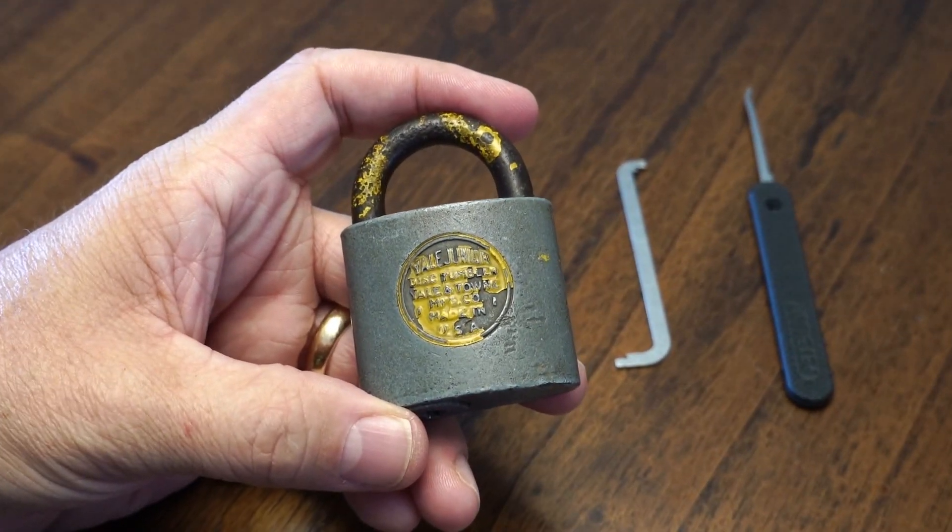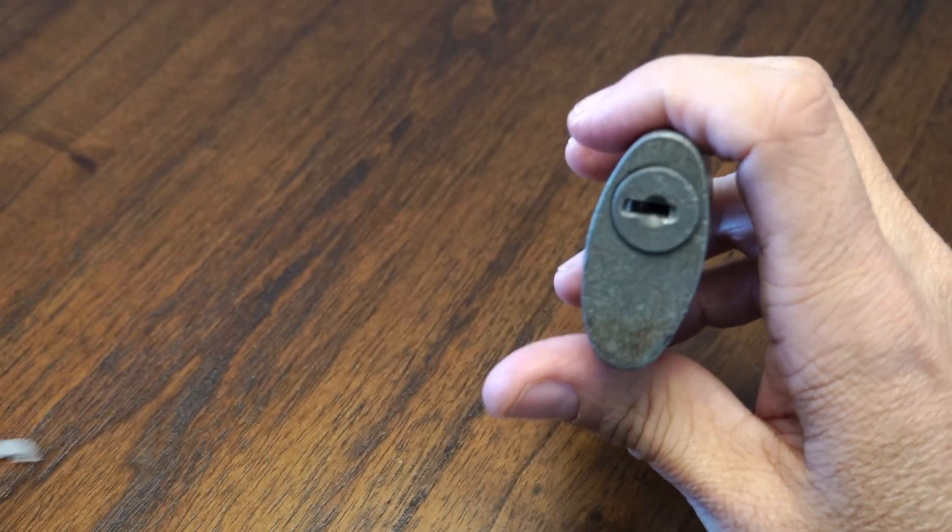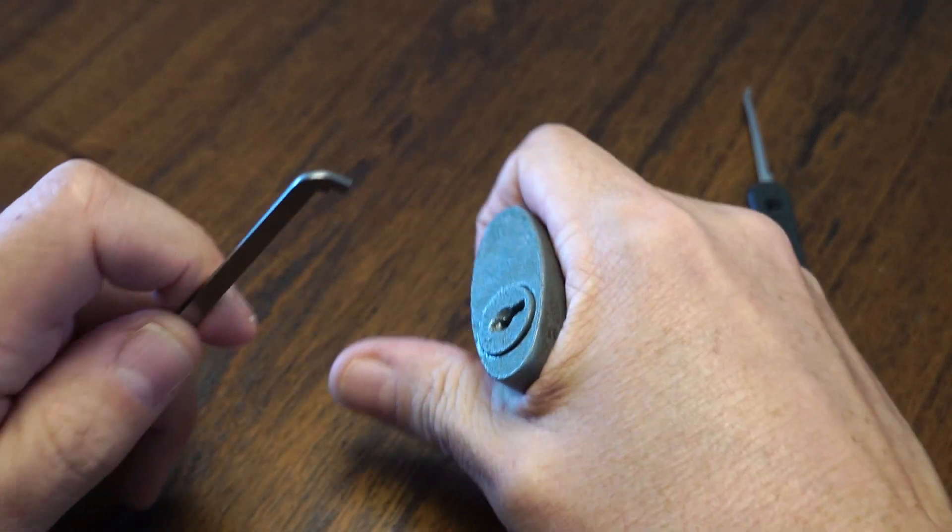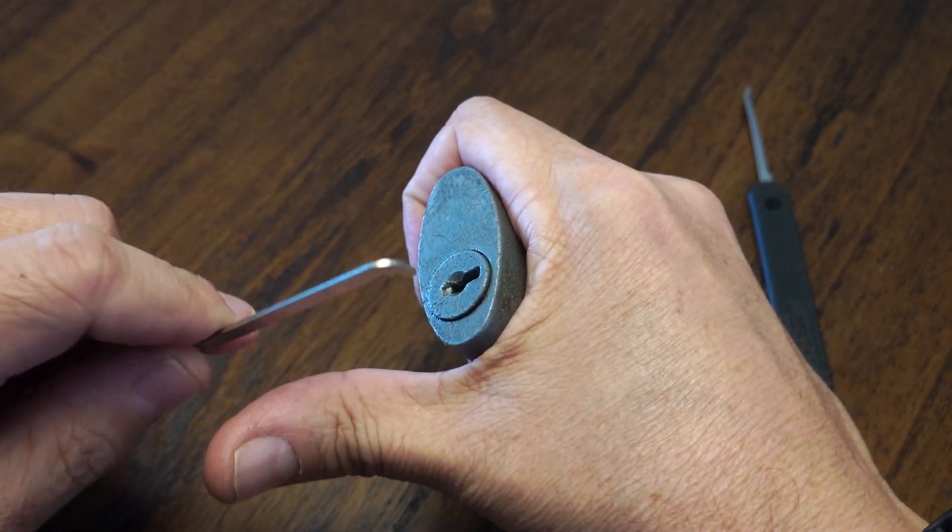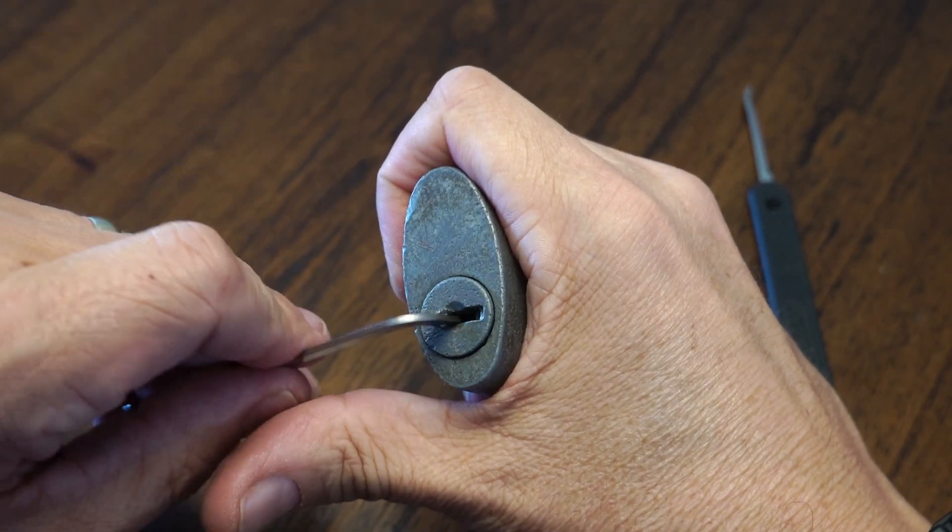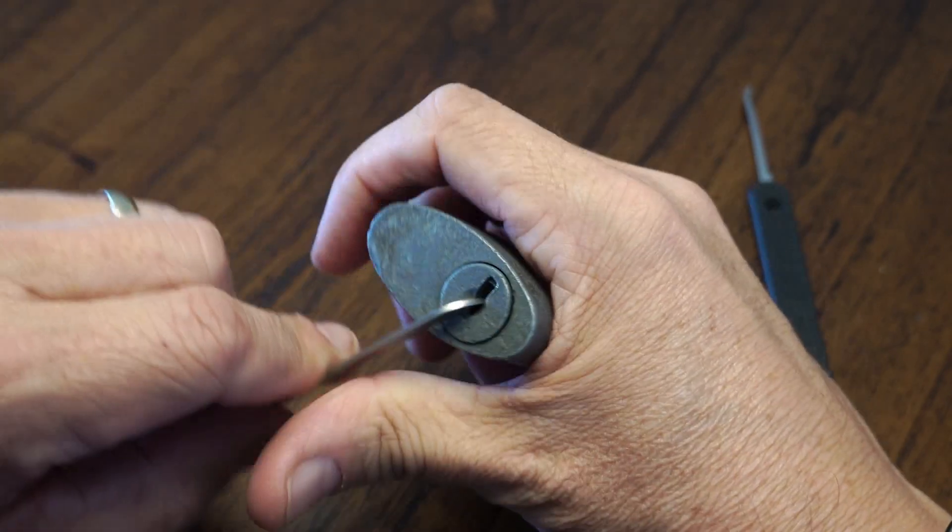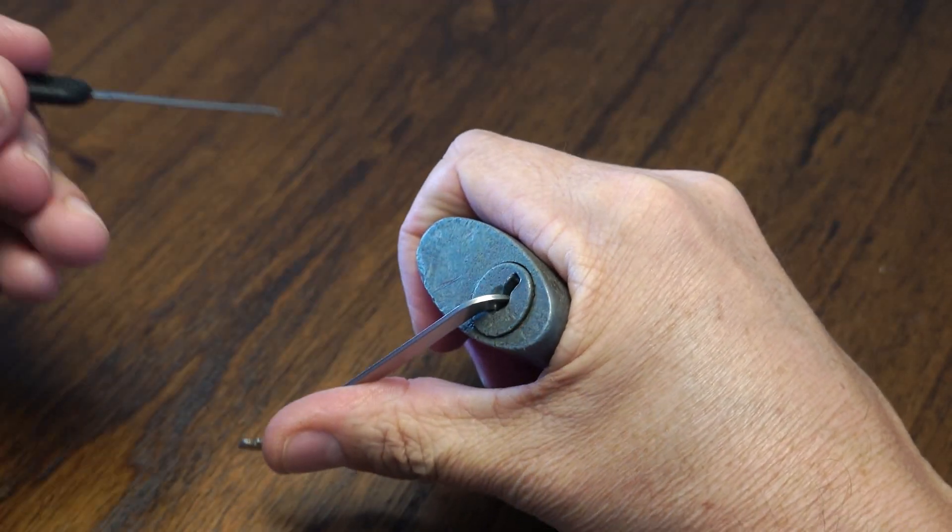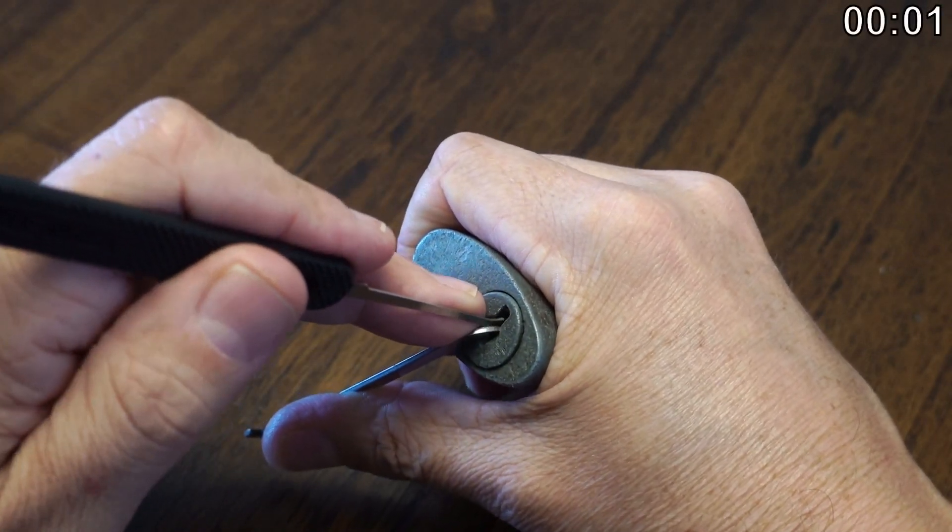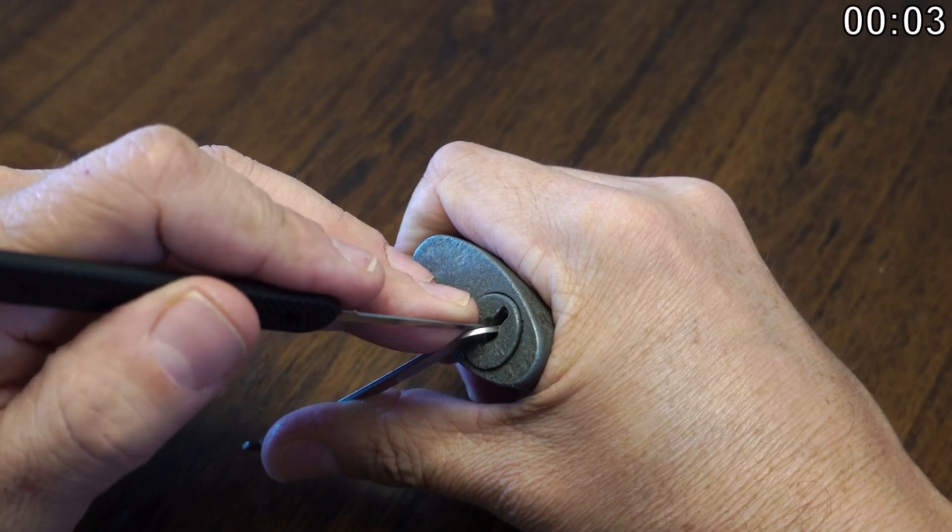With your traditional single pin or single wafer picking, I just have sort of like a regular pry bar in 50 thousandths and a number one hook in 25 thousandths. So just feeling the pins or wafers...